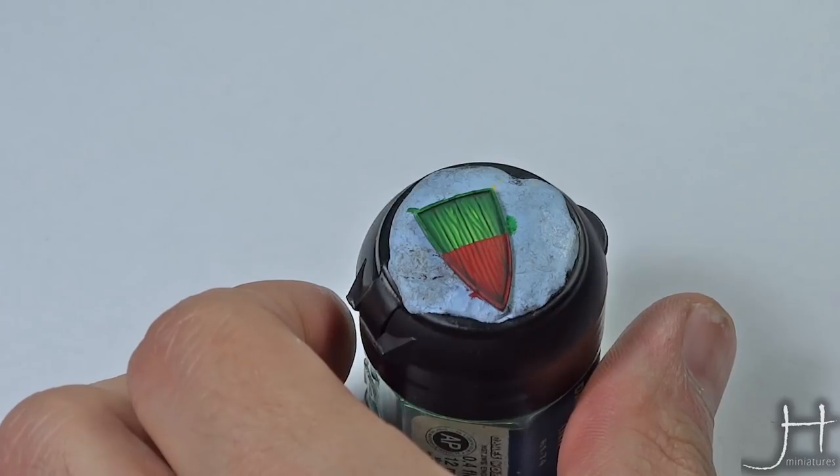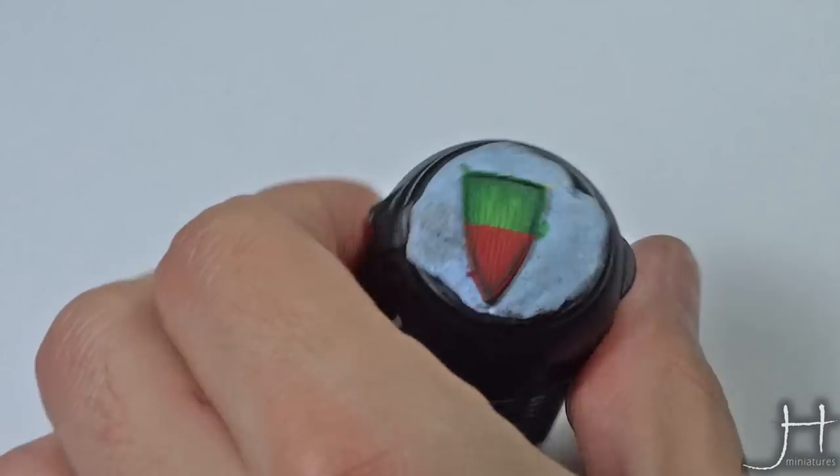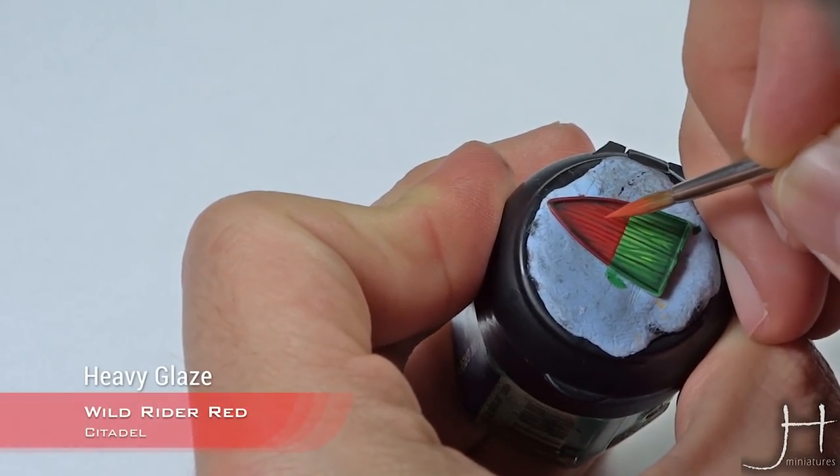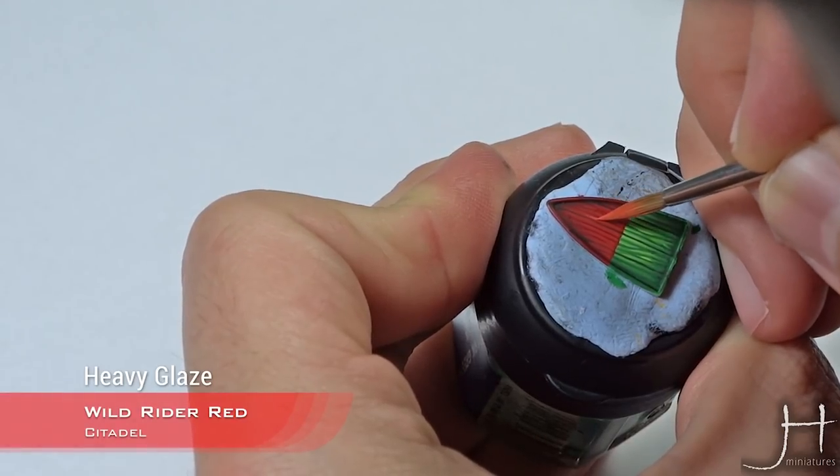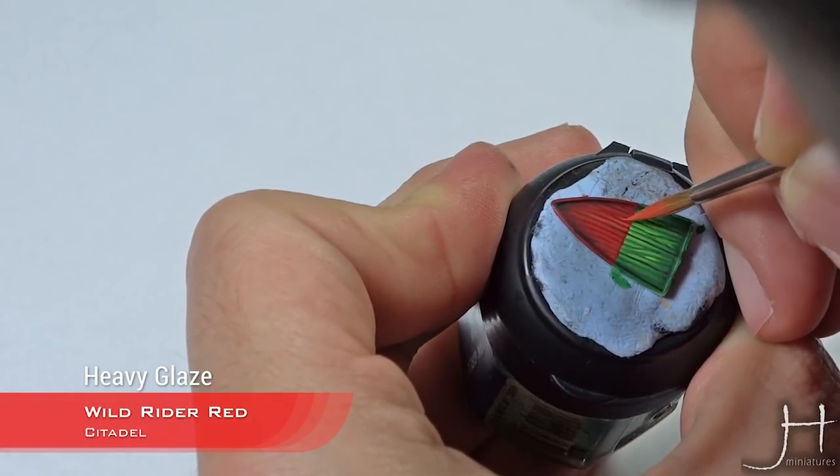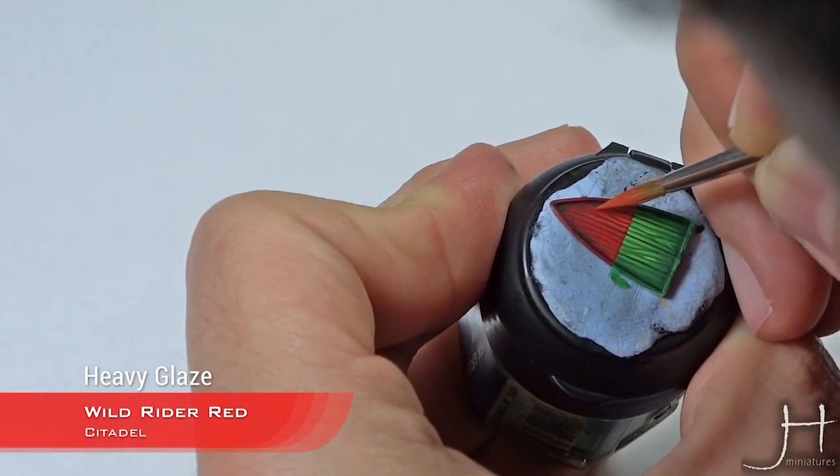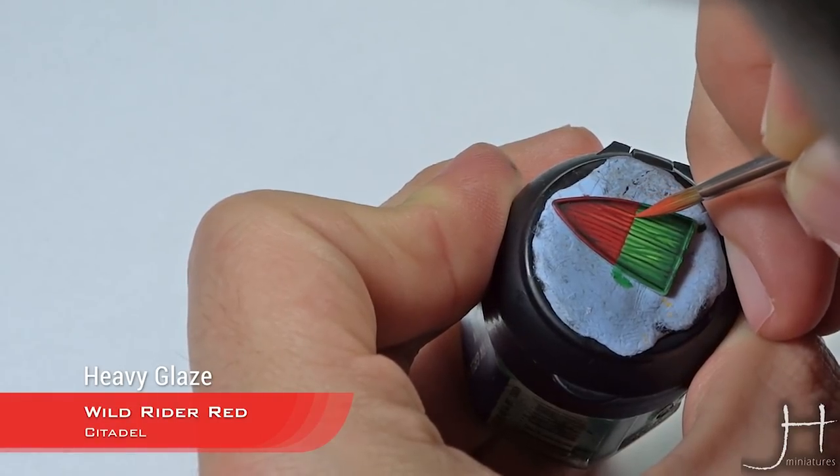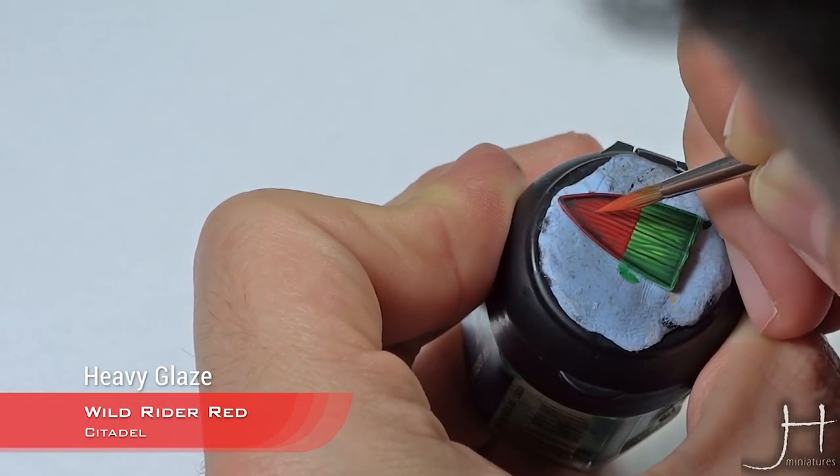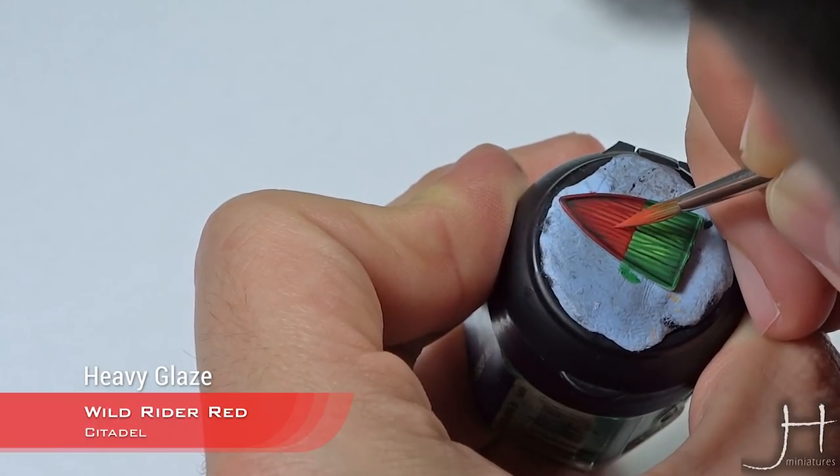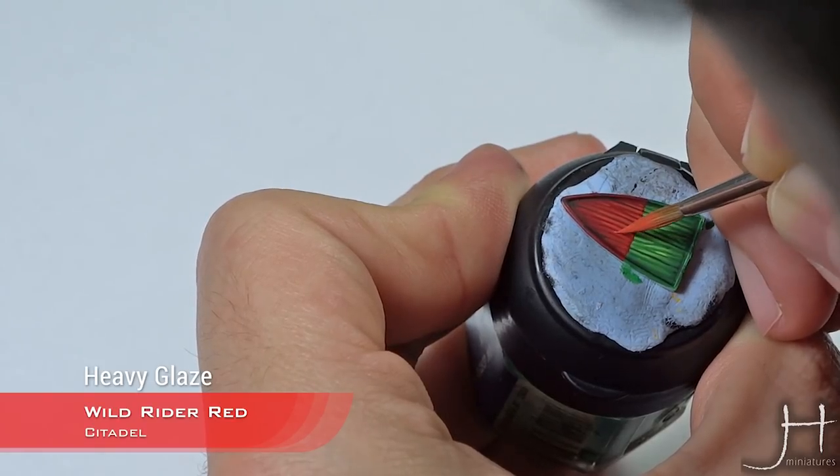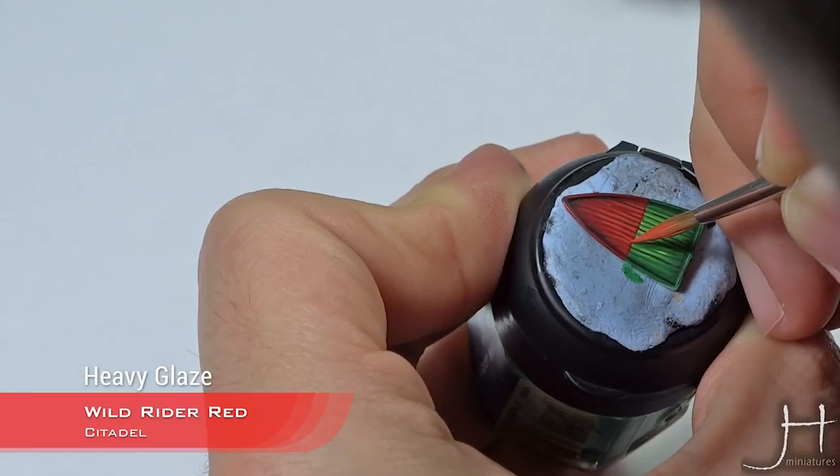The next highlight would be Wild Rider Red. It's like an orangey red, very desaturated, very nice. And again from darker to lighter, concentrating more in the central part of the shield, a little bit here and on the edges of the wood panel. If you mess up the red and you go into the green part, which can happen, you'll just tidy up later. Like it.